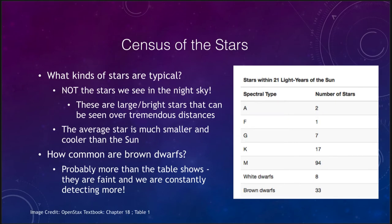What kind of stars are typical? What we find is these are not the stars that we see in the night sky. These are very large and bright stars that can be seen over tremendous distances, hundreds or even thousands of light years away. A better idea of typical stars is the stars near the Sun. The average star is actually smaller and cooler than the Sun.